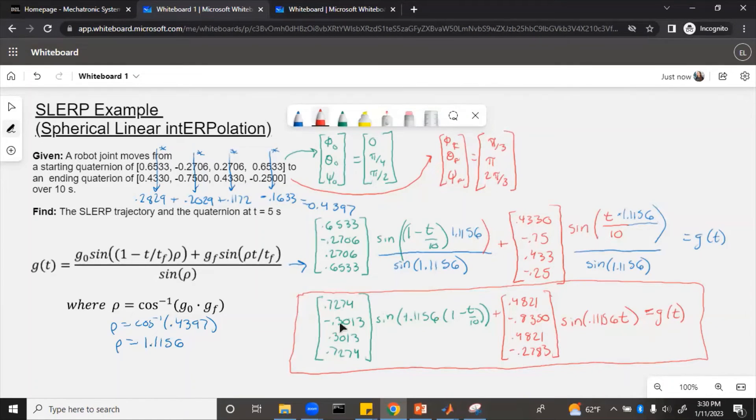Now in order to determine what is the quaternion at t equals 5 seconds, we just plug 5 in for t. So this would be the value of the quaternion at 5 seconds.